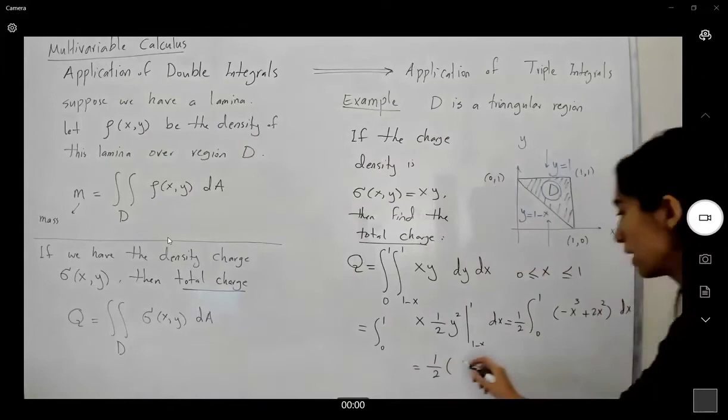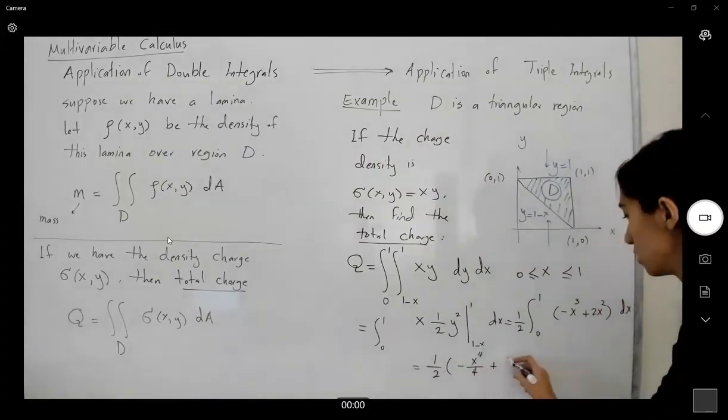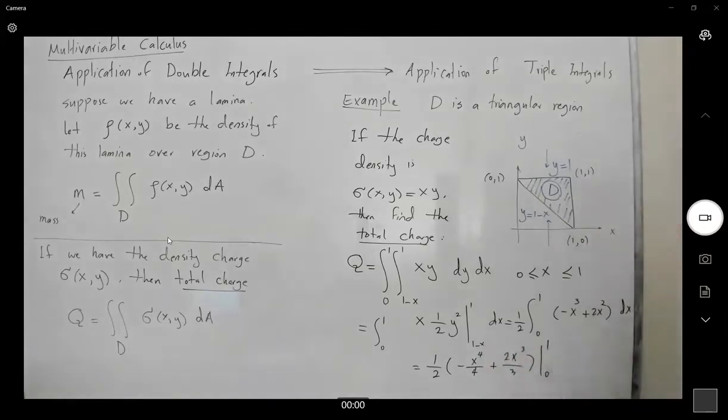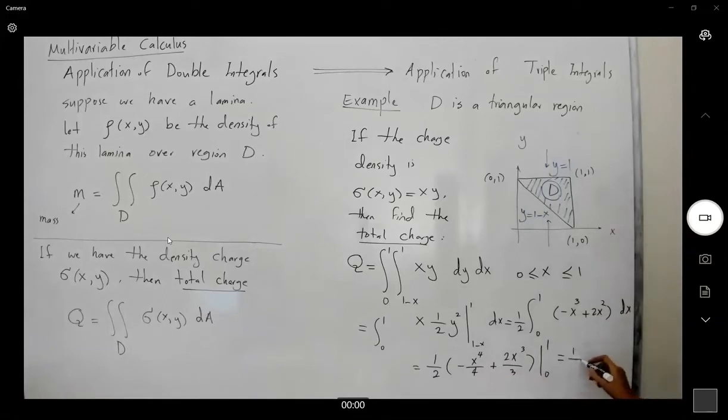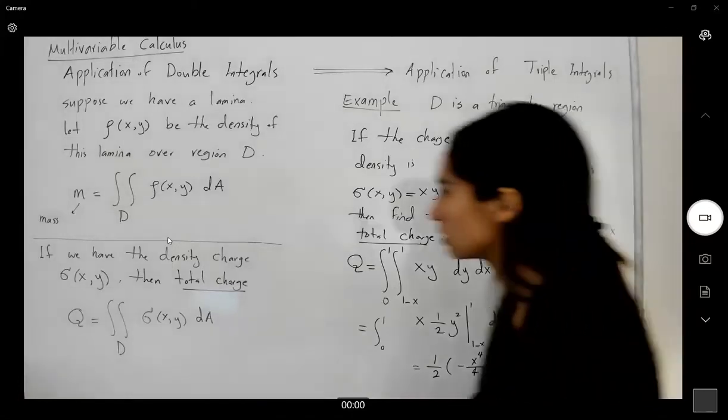Well, I have a half. The integral is negative x to the fourth divided by 4 plus 2x cubed over 3. My x range is between 0 to 1. I'm not worried about the lower bound because both of these have x in them. So if I plug in 1, I get a half, negative a fourth plus 2/3, which is equal to a half times (negative 3 plus 8 over 12), or 5 over 24. This is your total charge.